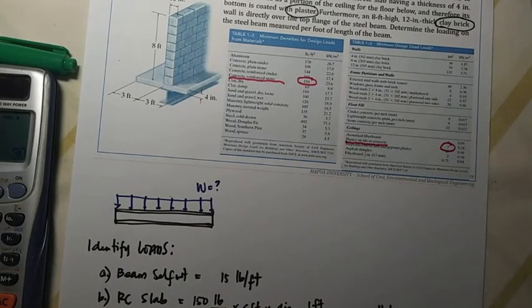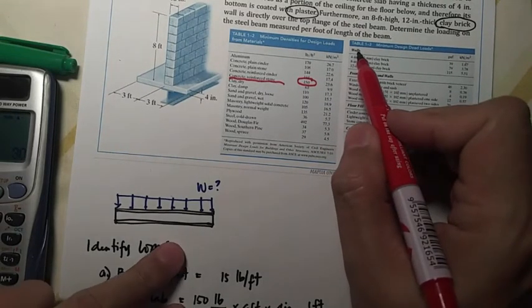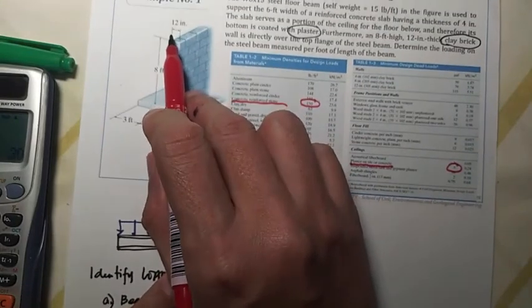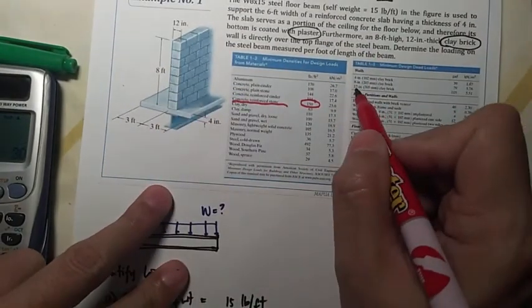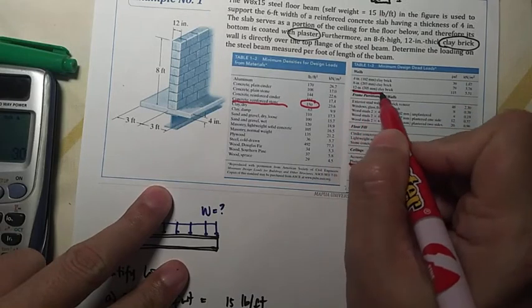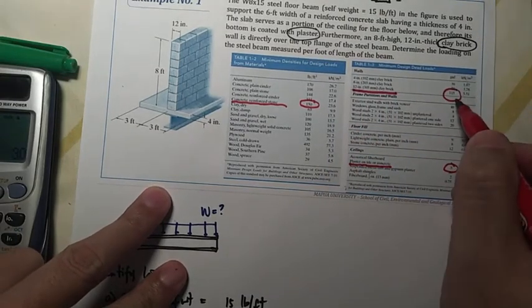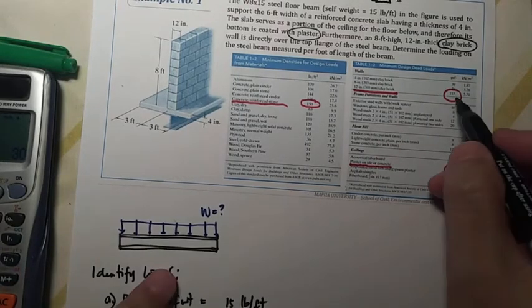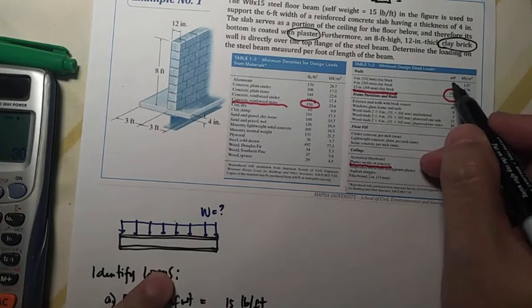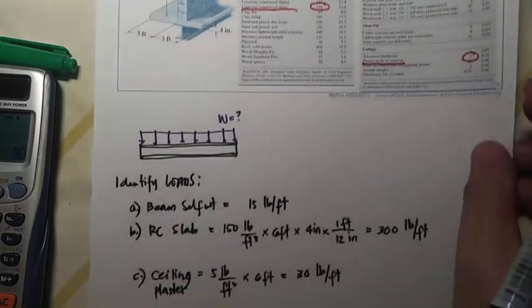Again we're going to refer to the table. Where is the wall? This is it, wall, and this is made of 12 inches. 12 inches is here, 12 inch clay brick wall. So we have 115, and the unit of 115 is PSF, pounds per square foot.